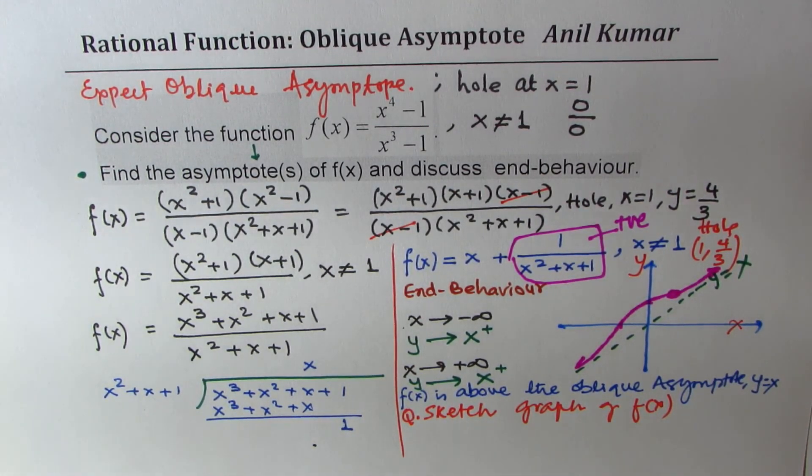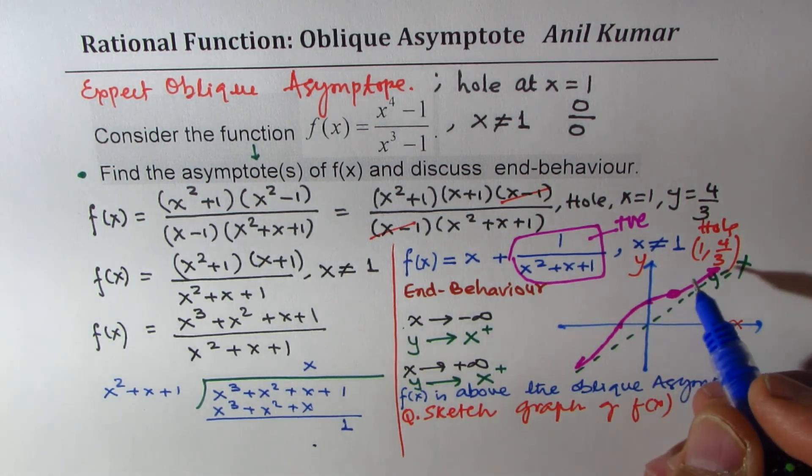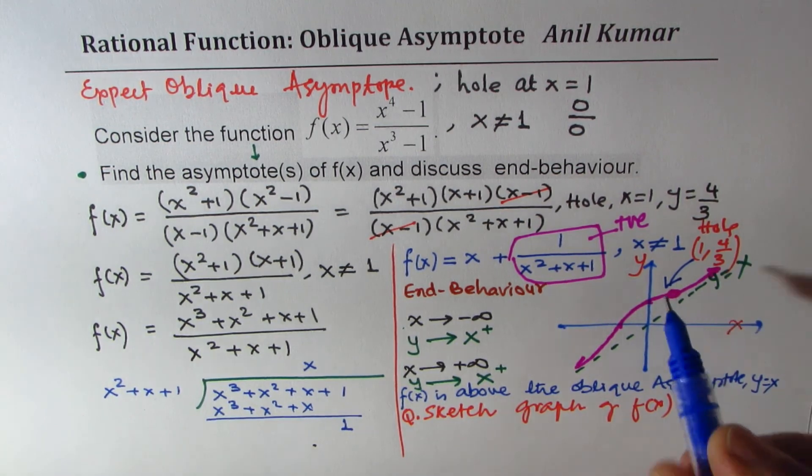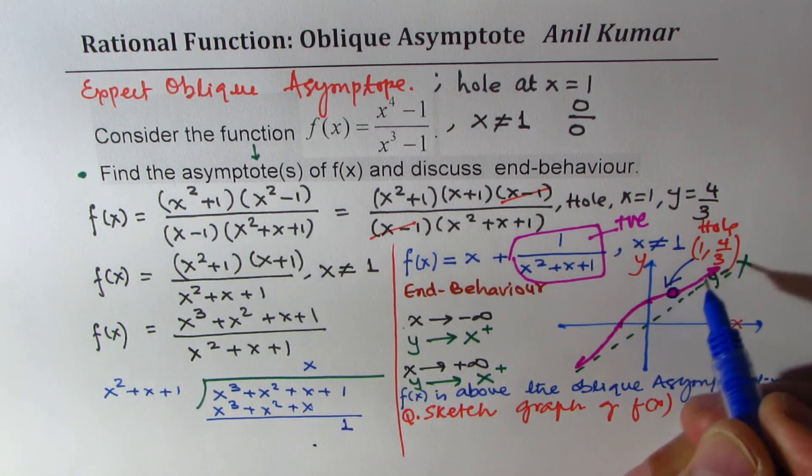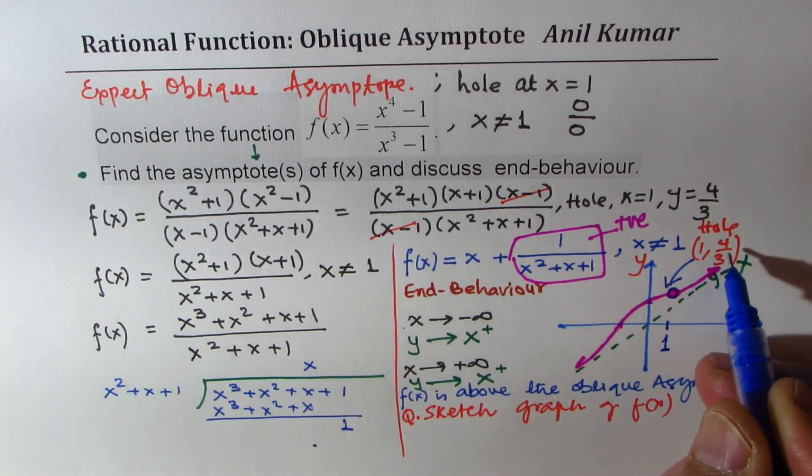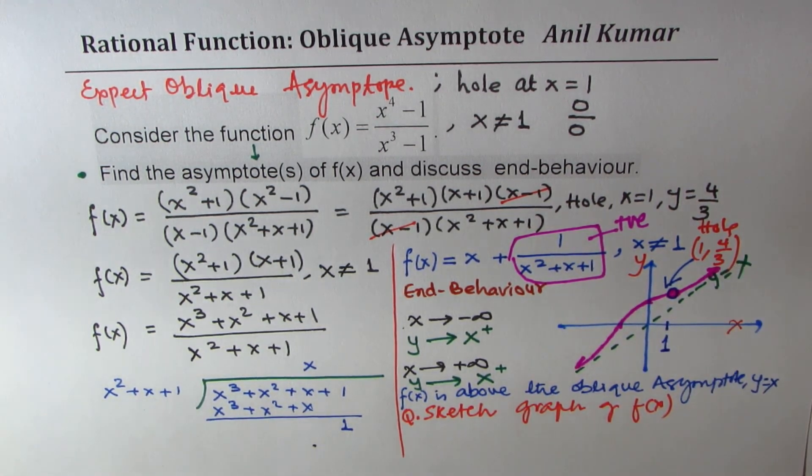Feel free to write your comments and share your views. And if you like and subscribe to my videos, that would be great. So this is the location of the hole, which is at x equals 1, and the y value is 4 over 3. Perfect. I hope that makes sense. Thanks for watching, and all the best.